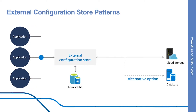Let's look at the external configuration store pattern. Many built-in configuration systems read the data when the application starts up and cache the data in memory to provide fast access and minimize the impact on application performance. Depending on the type of backing store used and the latency of this store, it might be helpful to implement a caching mechanism within the external configuration store. This pattern is useful for configuration settings that are shared between multiple applications and application instances, or where a standard configuration must be enforced across multiple applications and application instances, including a standard configuration system that doesn't support all of the required configuration settings such as storing images or complex data types.